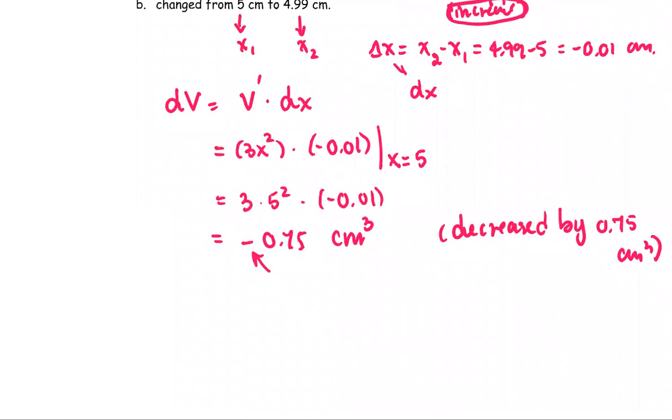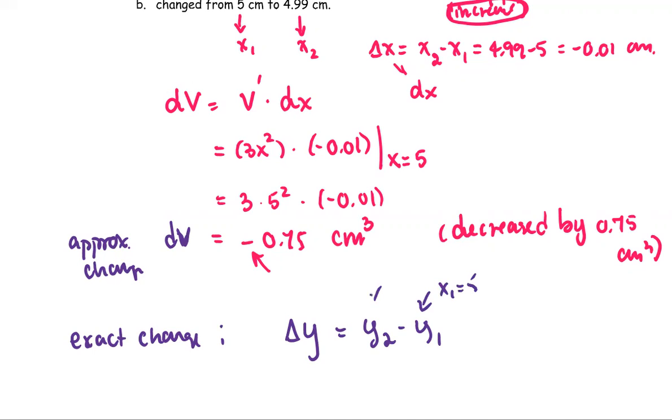So let's compute the exact change. I'm going to put a note here. This one is the approximate change. We're going to compute the delta y to compare with the dy. Delta y is y2 minus y1. The x1, since the x1 is the same, x1 is 5, but the x2, in the negative way, the x2 is 4.99.